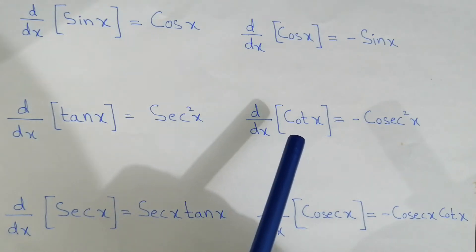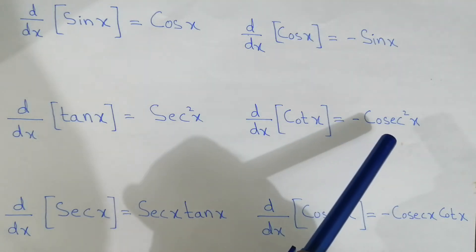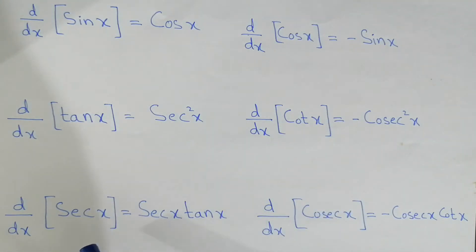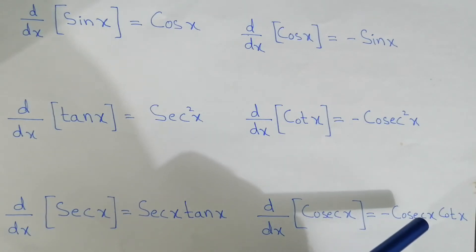And the derivative of cotangent is negative cosecant squared. The derivative of secant is secant into tangent. And the derivative of cosecant is negative cosecant into cotangent.